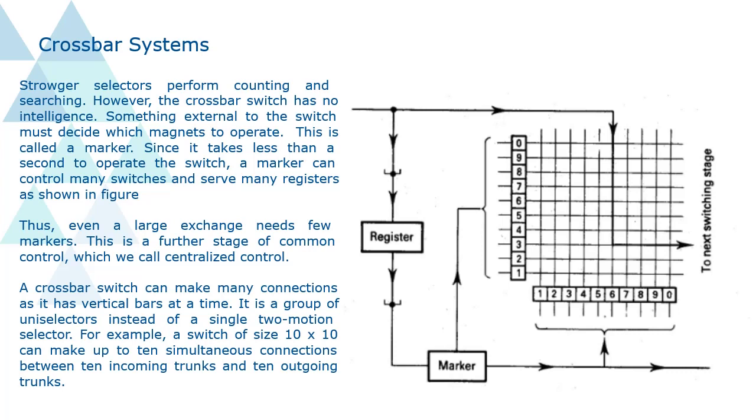Since it takes less than a second to operate the switch, a marker can control many switches and serve many registers as shown in figure. Thus, even a large exchange needs few markers. This is a further stage of common control, which we call centralized control.